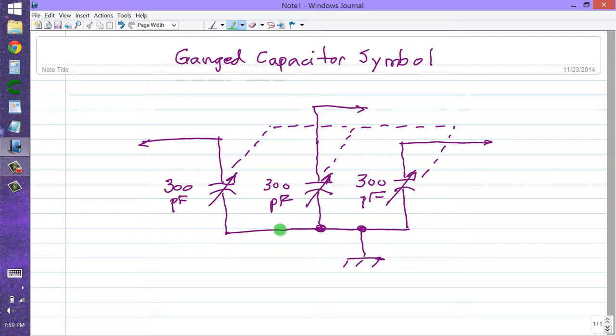Their rotor plates are all connected to a common ground. That's standard for air variables - for the rotor plates to go to ground, so that if you have many air variables in a circuit, chances are their rotor plates all end up in the same place. This symbol here for a chassis ground or common ground.